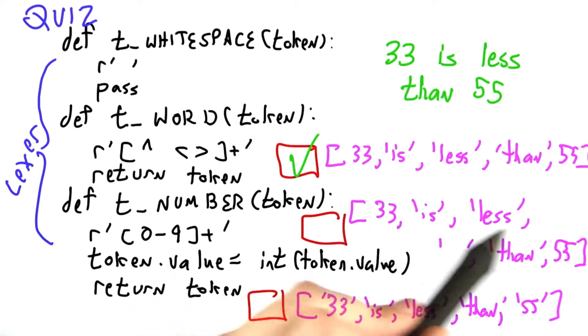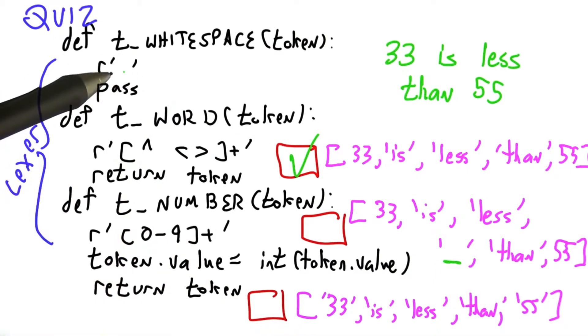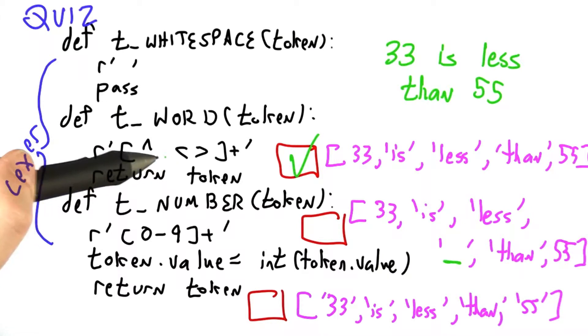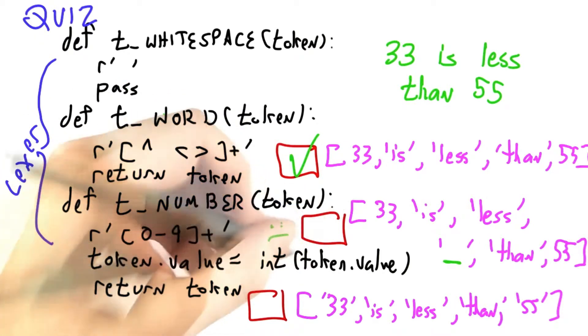Here we have pretty much the same thing except that we appear to be returning space as a word. That's not going to happen because our words can't include spaces, and this whitespace rule would skip over it beforehand. That's not it.